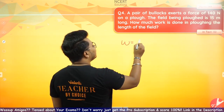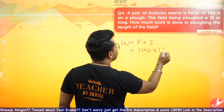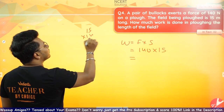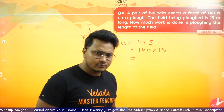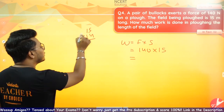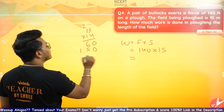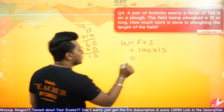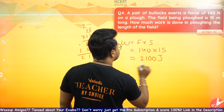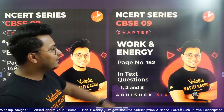Another question: Work done equals force into displacement. Force is 140 Newton and displacement is 15 meters. So 15 into 140 — let's calculate: 15 × 14 = 210, so 15 × 140 = 2100. So 2100 Joules is the correct answer.